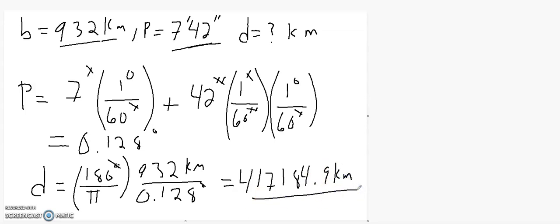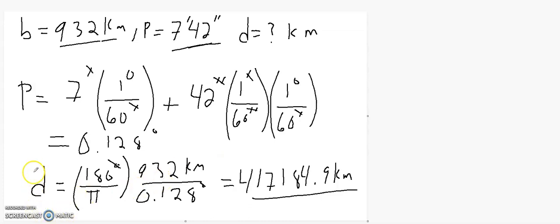There's an example of how you do parallax. Remember: you measure the baseline, then make sure the angle is in degrees. Converting it — you're not always given a combination of arc minutes and arc seconds, but this is probably the most complicated it would be. If it was given in degrees, arc minutes, and arc seconds, you wouldn't change the degrees portion, but you'd have to change the arc minutes and the arc seconds.